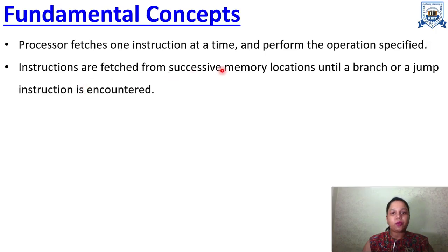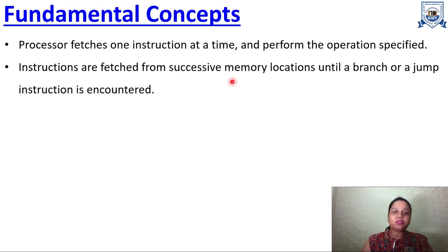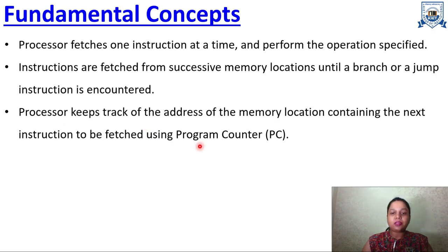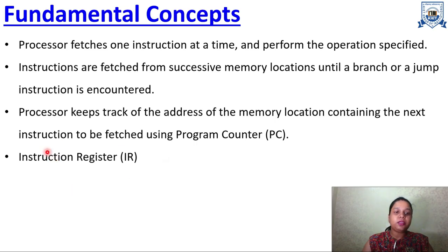Instructions are fetched from successive memory locations until a branch or jump instruction is encountered — all instructions are sequenced. For example, if the first instruction is at location 1000, the next will be at 1004 because it may be a 4-byte instruction. The processor keeps track of the address of the next instruction using the program counter, and the current instruction is written in the instruction register.